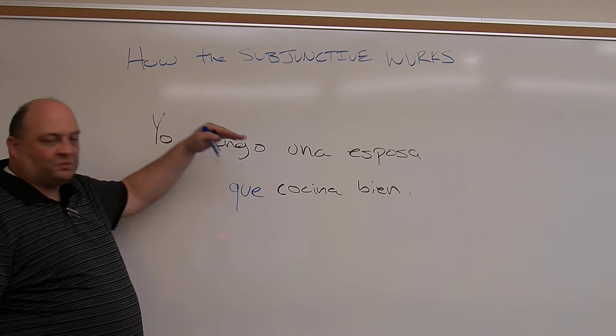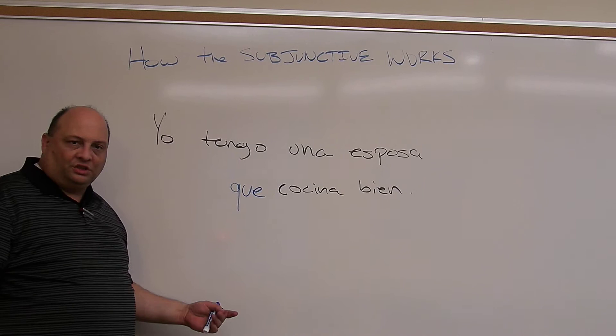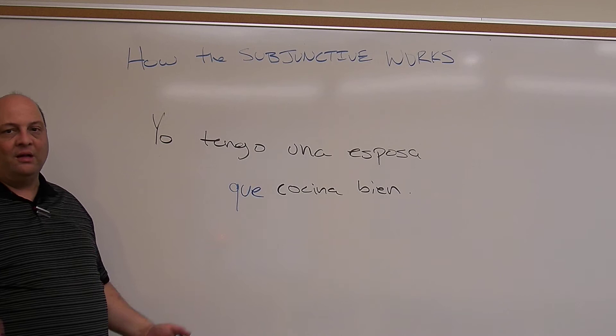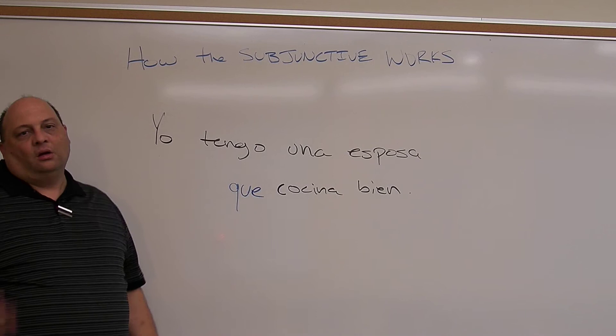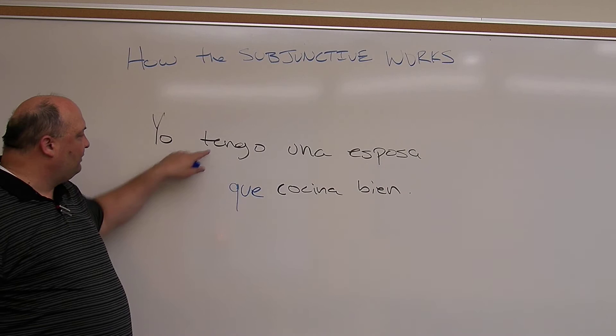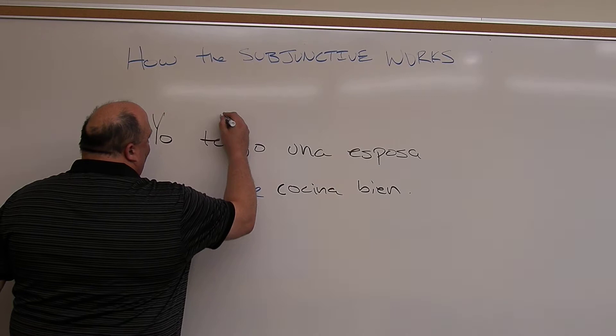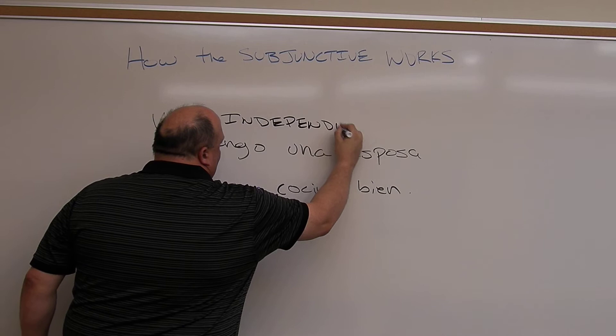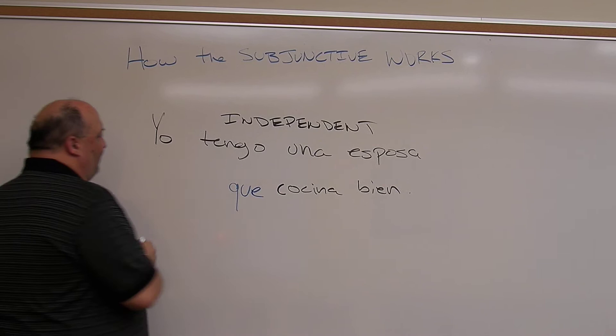The first clause — 'Yo tengo una esposa' — can stand by itself. I can walk up to you on the street and say 'Yo tengo una esposa,' 'Yo tengo un coche,' 'Yo necesito diez dólares' — it makes sense. But I can't walk up to you and say 'Que cocina bien' — it depends on the first part of the sentence to give it meaning. So we call this one the independent clause — it can act on its own, it's its own boss.